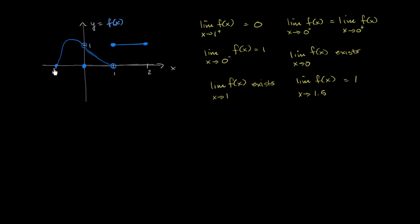We have a function f of x graphed here, and we have a bunch of statements about the limit of f of x as x approaches different values. We want to figure out which of these statements are true and which are false.